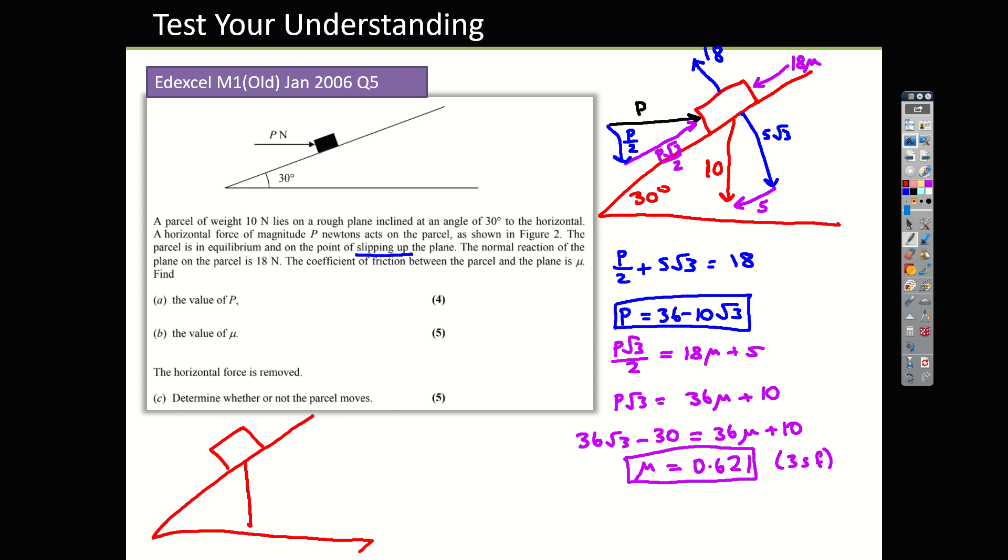Horizontal is removed. The weight hasn't changed. The normal reaction, however, has changed. It will now be only this value here, which is 5 root 3. So let's add our new normal reaction force to this 5 root 3. Now the box is attempting to slide down the plane. Well, we think. We suspect. We don't know if that's going to move or not. But this force is attempting to pull the box down. Friction, therefore, is going to act upwards. That's going to be μR. So that's, I'll write μ because we know what the value is. μ times 5 root 3.